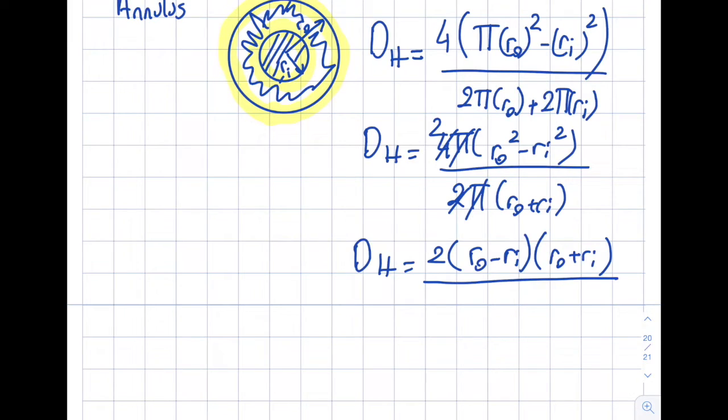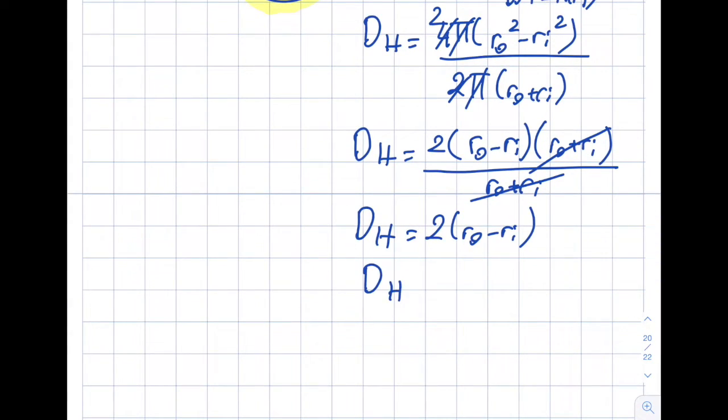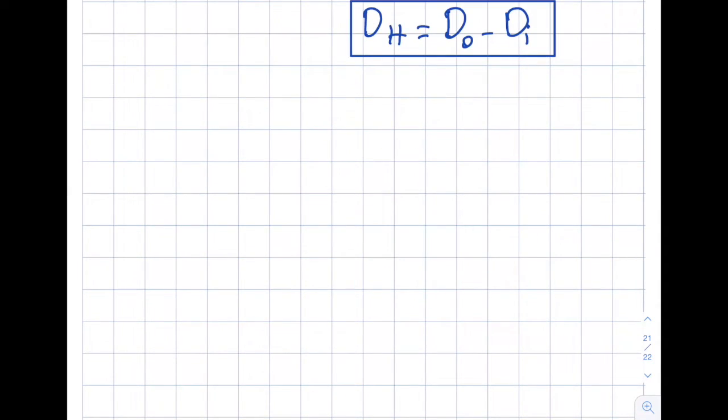So that will be (r_o - r_i)(r_o + r_i), right, divided by (r_o + r_i). So these cancel. So you can see this becomes 2(r_o - r_i), and actually if you want to write it this way as well, this can also be D_o - D_i for an annulus, okay.